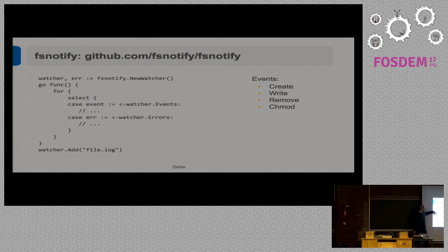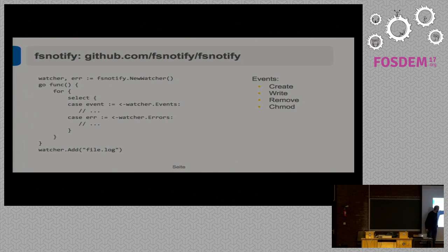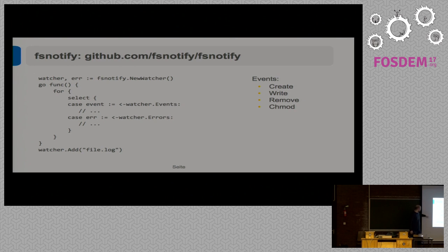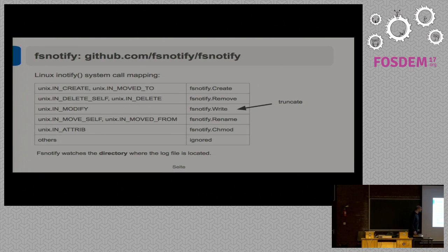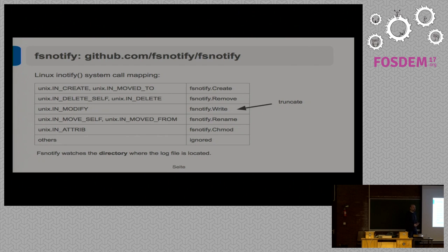How it works: you initialize an fsnotify watcher and it gives you an events channel. You read from that channel, which blocks until anything happens, and once something happens you get an event to handle. The events are: Create (a file was created), Write (somebody wrote to a file), Remove (a file was removed), and Chmod (file attributes changed). This looks exactly like what we need — no nasty poll loop, no configuration needed, and once a log file is written we get it immediately. However, there are some subtle problems with the fsnotify library.